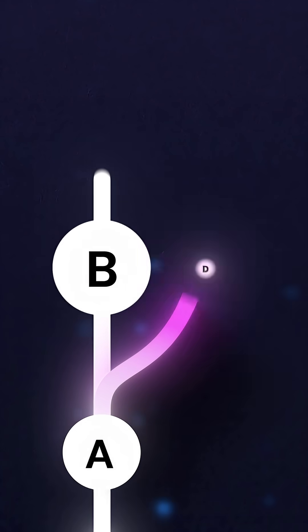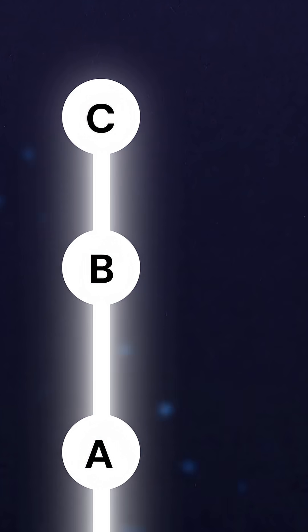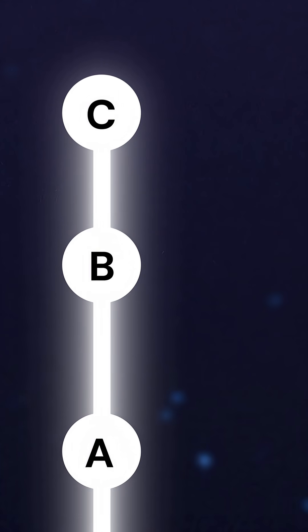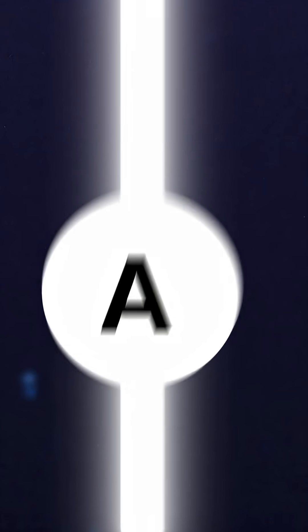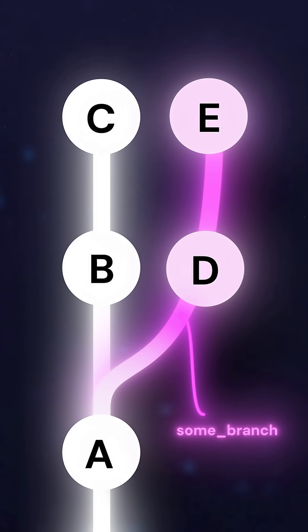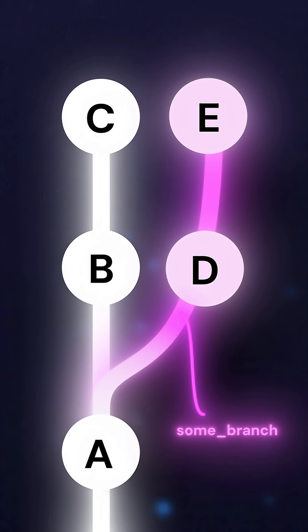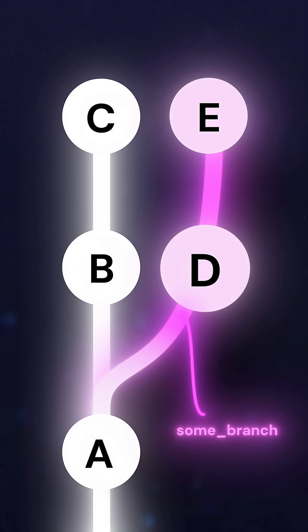We are merging two branches together with diverging history. The diverging history simply means that the main branch, the one we branched off of at point A, has commits and we, some branch, have added more commits. Main has B and C. Our branch, some branch, has D and E.